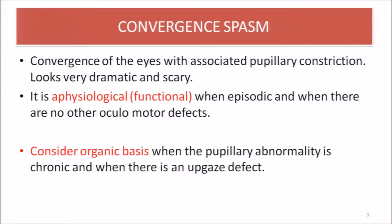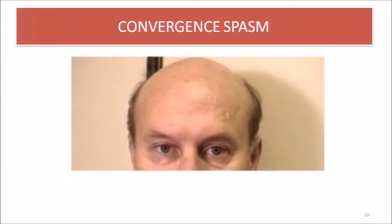Convergence spasm — convergence of the eye with associated pupillary constriction — looks very dramatic and scary. It is of two types: functional and organic. It is considered functional when episodic and when there are no other oculomotor defects. Consider convergence spasm to have an organic basis when the pupillary abnormality is chronic and when there is an upgaze palsy defect.